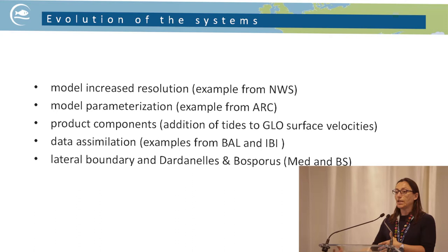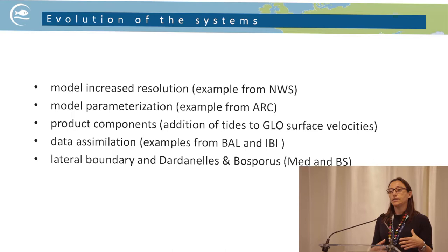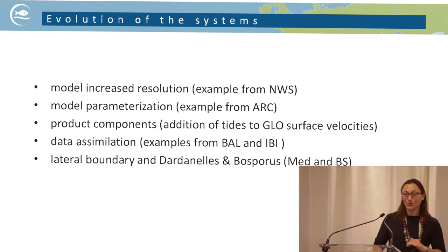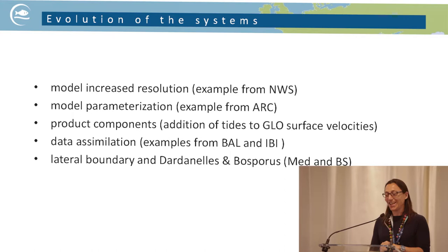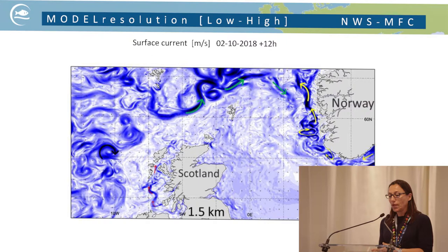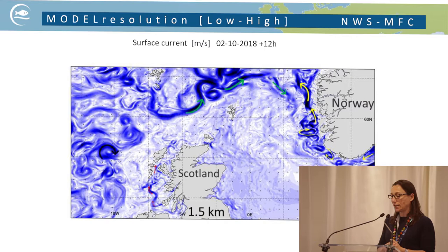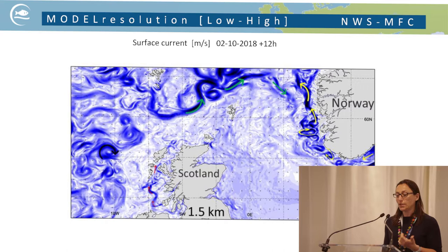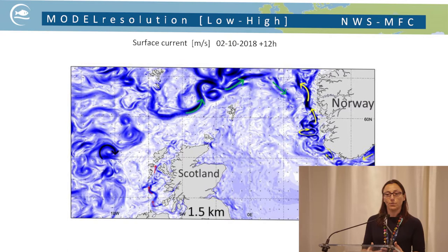The types of evolution these systems can go through include: modifications to model resolution, changes in model parameterization — with an example from the Arctic MFC — modifications to product components such as adding different components to surface current velocity as done for the global system, improving or adding data assimilation, and working on interconnections between regional and global systems and among the different regional systems at their borders.